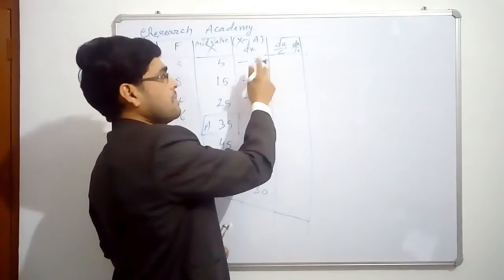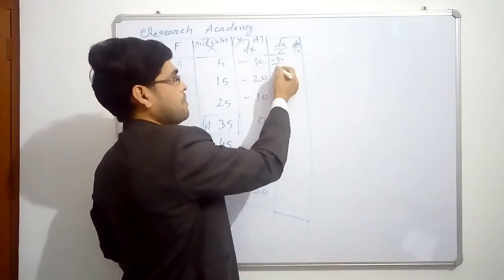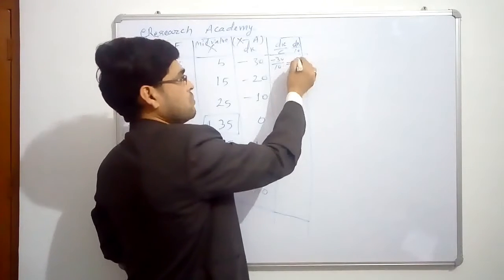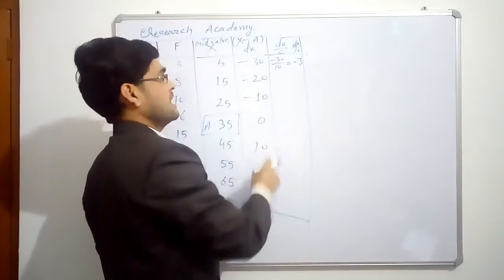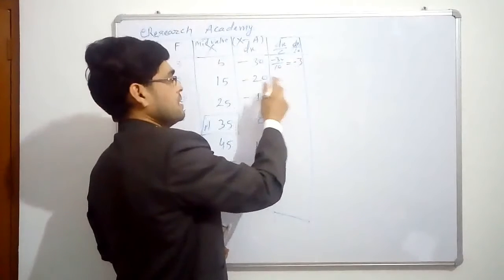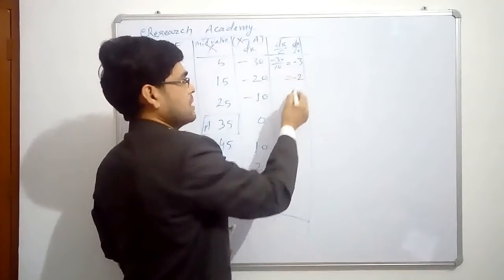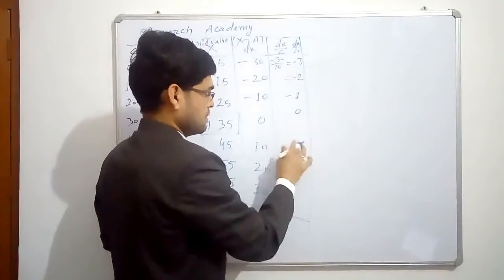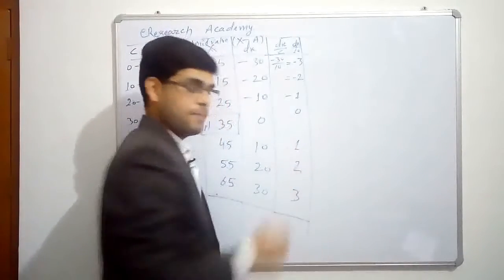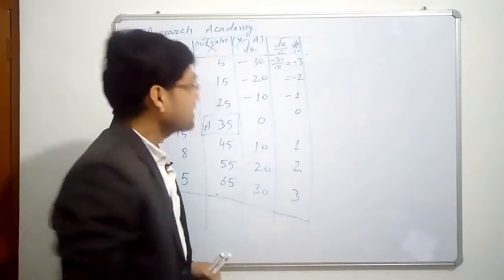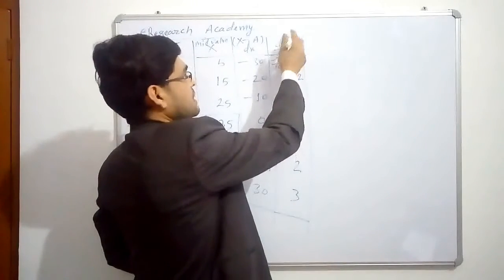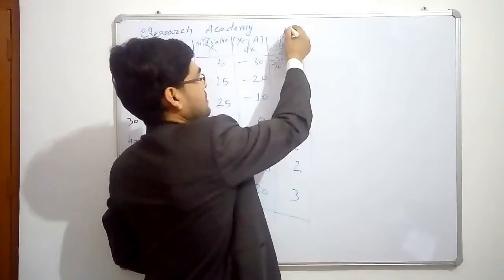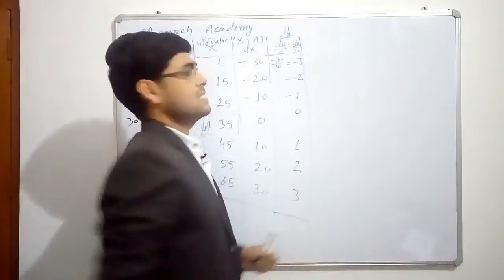So dx by 10. This will become minus 30 upon 10 equal to minus 3. The same we will do for rest of these dx's. Because common factor is 10. Minus 20 upon 10, that will be minus 2, minus 1, 0, then 1, 2 and 3. So these are our dx upon c. This is also known as d-x. It is pronounced as d-x dash.